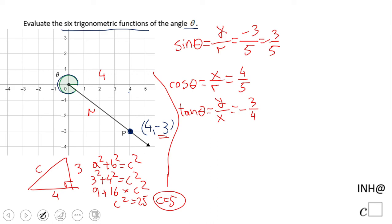What about secant? If you remember, secant is the reciprocal of cosine. So that would be R over X, and it's going to be 5 over 4.